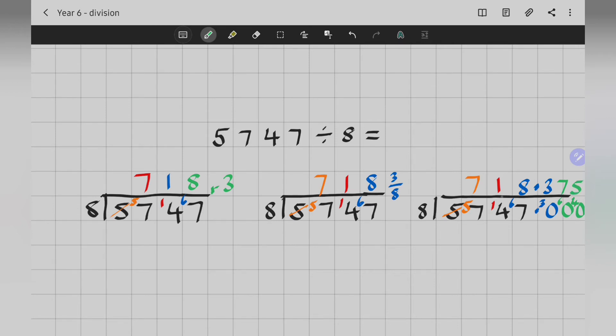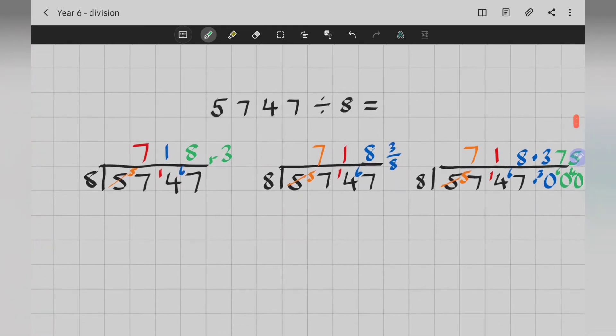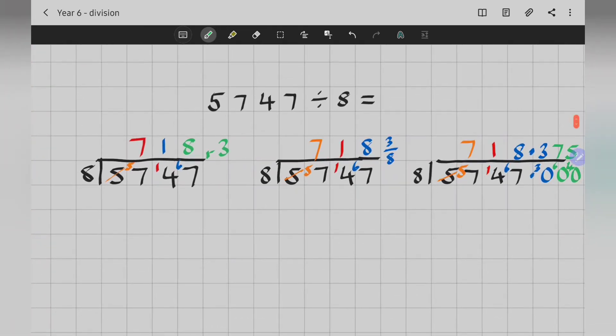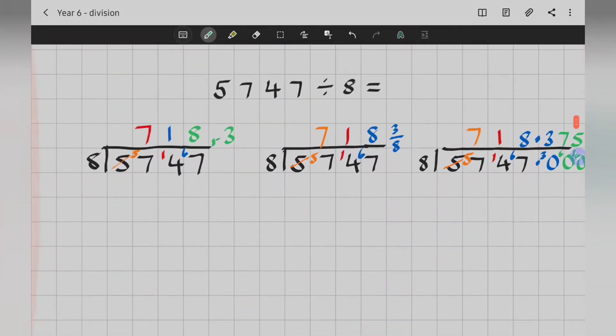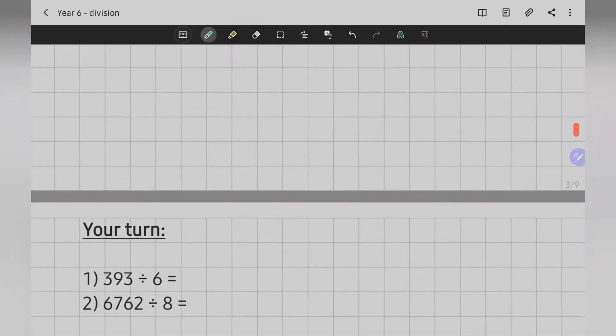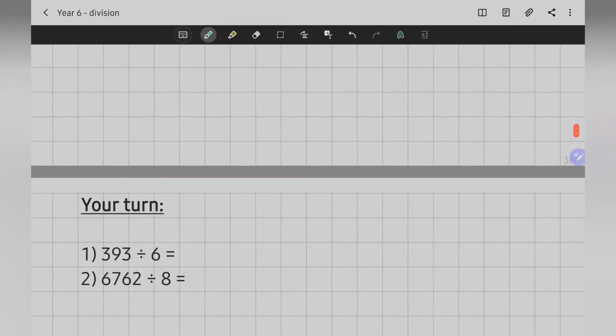So, 718.375. So, there's my 3. 718 remainder 3. 718 and 3 eighths. Or 718.375. 3 decimal points is about as far as we'll go. We don't really want to deal with numbers with lots and lots of places after the decimal point. So, have a look at those again. You might want to rewind it and re-watch how I did those. And then you can have a go at these two. Pause the video now and have a go.